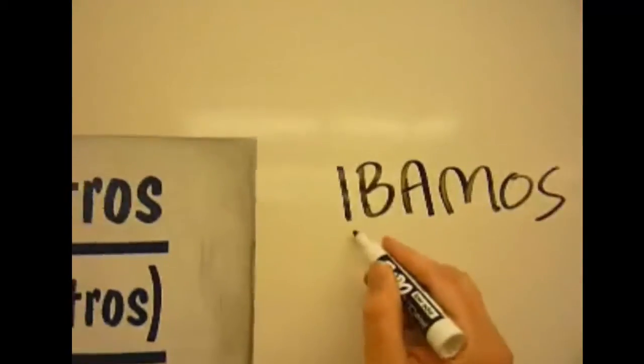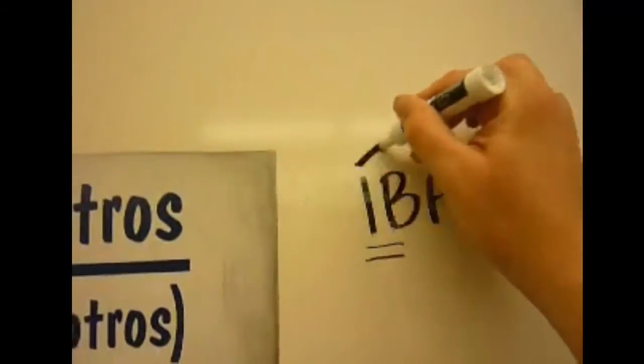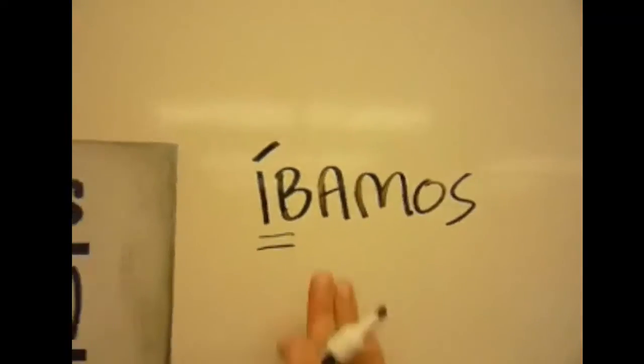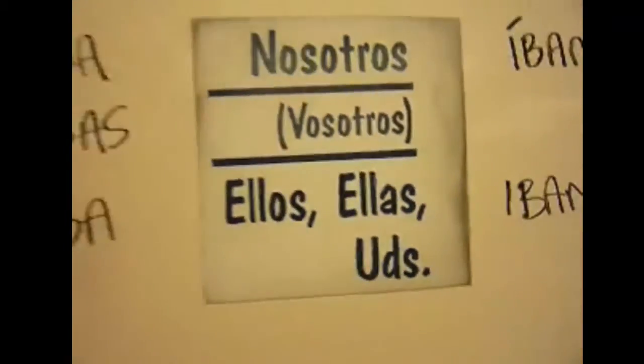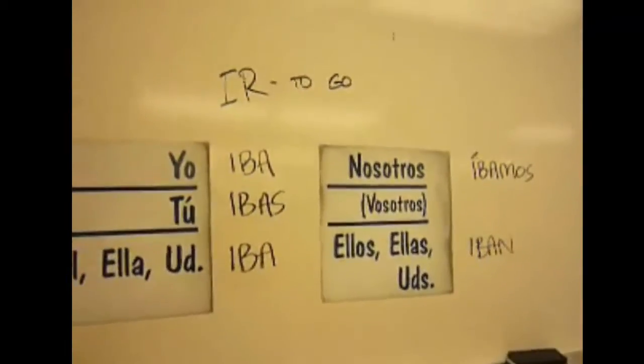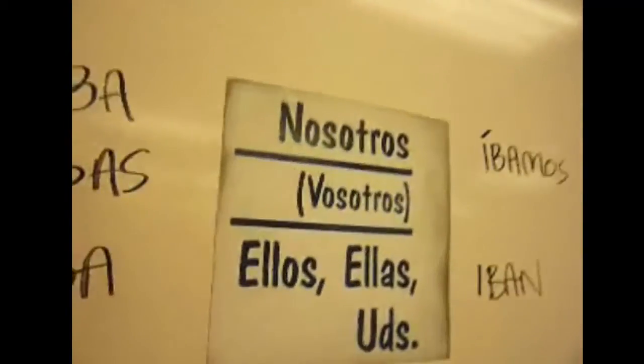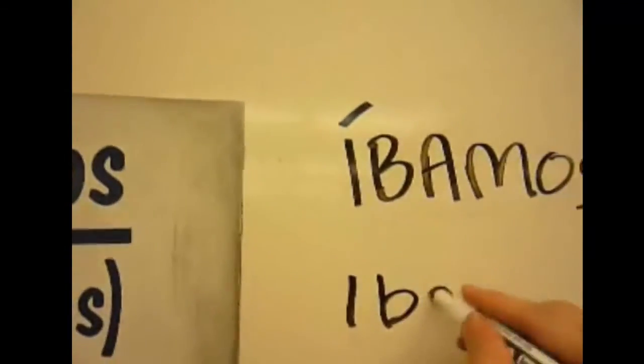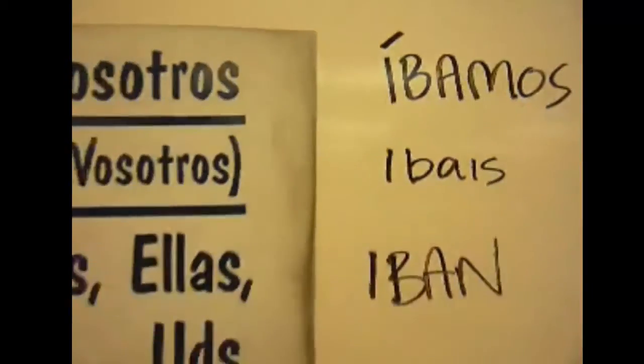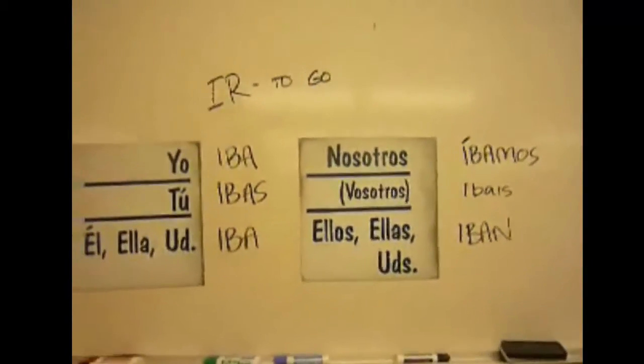Now the stress is over this first letter here, the first I, so we put an accent on it. It's on the, not the next to last syllable, but before that, penultimate, and we've got ivan, ivan. So yo iba al supermercado cuando vi a mi amigo. I was going when I saw my friend. And if you're into the vosotros, we won't really deal much with it here. Here it is, ivan.